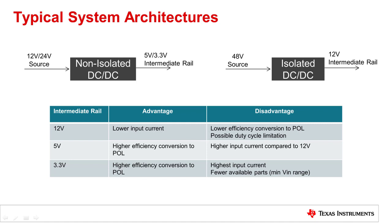Each option presents pros and cons. The 5V range has fairly high efficiency conversion to the point of load, while its input current is higher compared to the 12V range, which instead has lower efficiency and possible duty cycle limitations due to the low conversion ratio — for example from 12V to 1.2V. The 3.3V intermediate rail is also a valid option due to higher efficiency in the conversion, but it presents the highest input currents and fewer available parts due to the minimum VIN range.